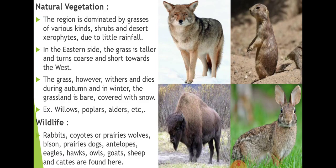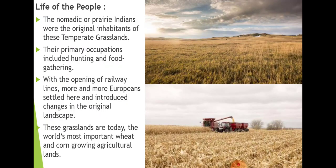Moving to wildlife — given the typical climate and limited natural vegetation, wildlife is also limited. Animals found here include rabbits, coyotes, prairie wolves, prairie dogs, antelope, goats, sheep, and cattle. Birds like eagles, hawks, and owls are also found. People use these animals for daily needs, livelihood, selling their skin and meat.